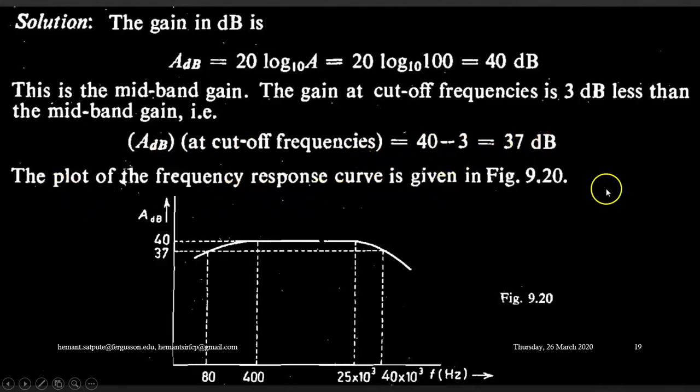The plot of frequency response curve is as shown in the following figure. It's a graph of gain versus frequency. 40 dB is the mid-band gain and less than 3 dB means 37 dB. There is a dotted line and the frequencies are 80 Hz and 40 kHz. This is the plot of frequency response curve.